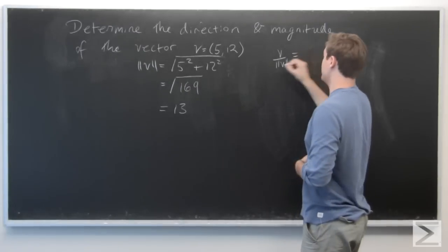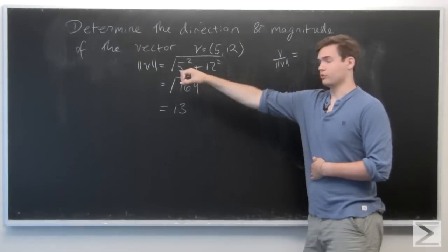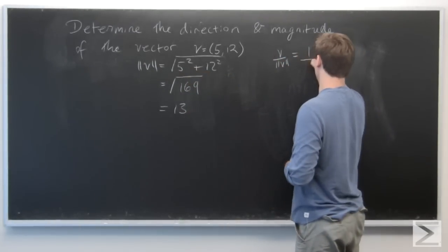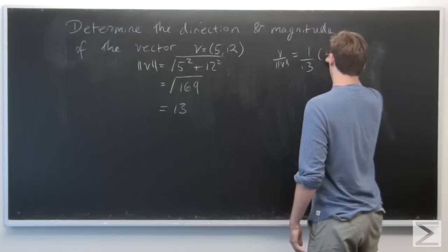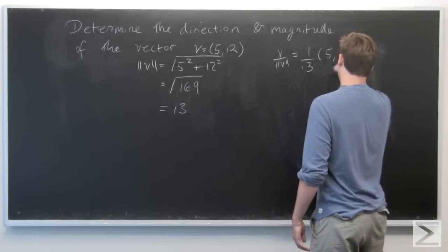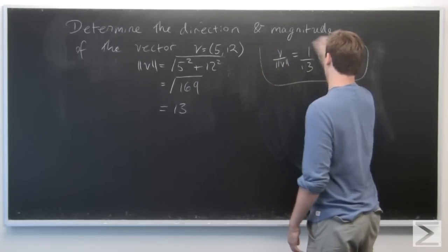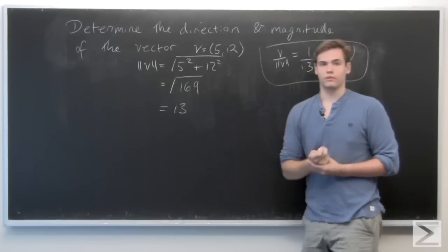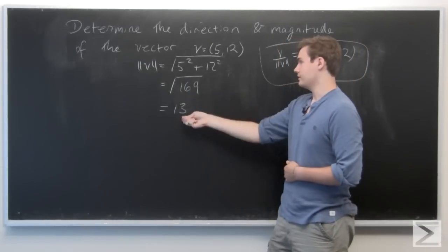So we take the vector v and we divide it by its norm, which is now a scalar. So this will be the direction of our original vector v, and this is its magnitude.